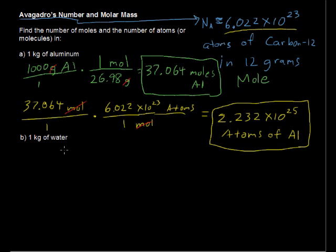Now what we have is 1 kilogram of water. Ah, a little bit different here. 1 kilogram of water. Well, water is H2O. So the molar mass, or we could talk about the molecular mass. Now because water is a molecule.